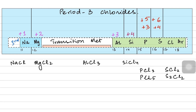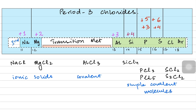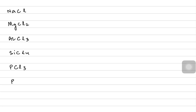We're going to talk about their bonding, their shapes, and their overall nature. The first two — sodium chloride and magnesium chloride — are ionic solids. Aluminium chloride is covalent. Silicon, phosphorus and sulfur make chlorides which have simple covalent molecular structures. Let's study the structures and see how they differ from each other, including the formulas for PCl₃ and PCl₅.